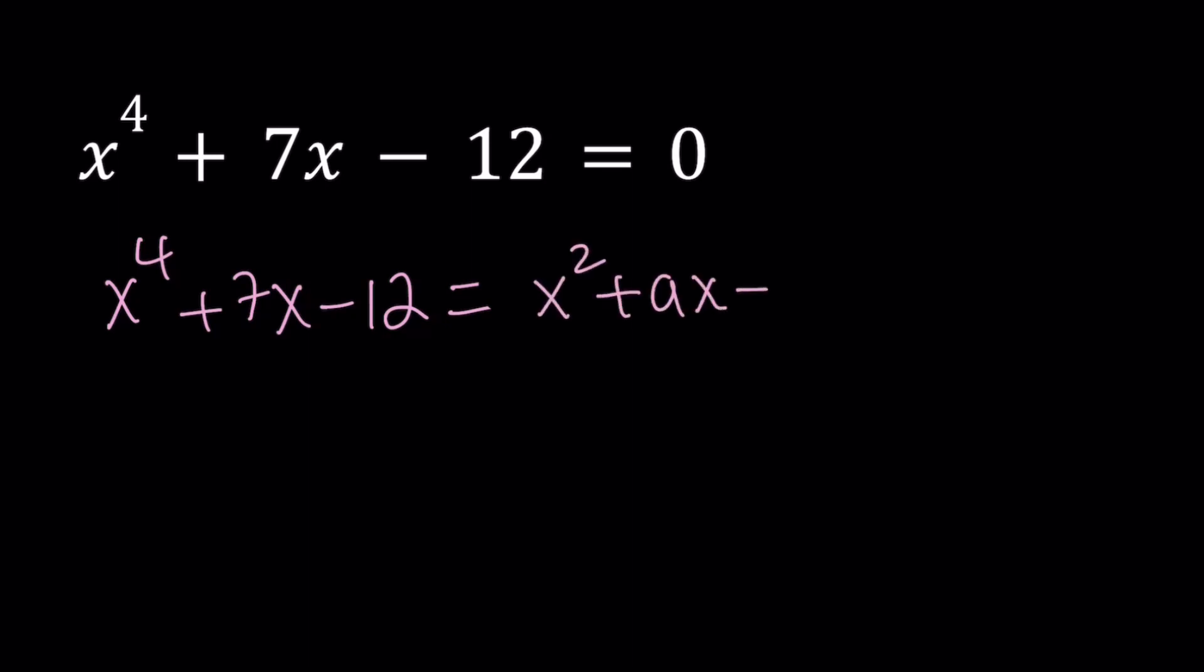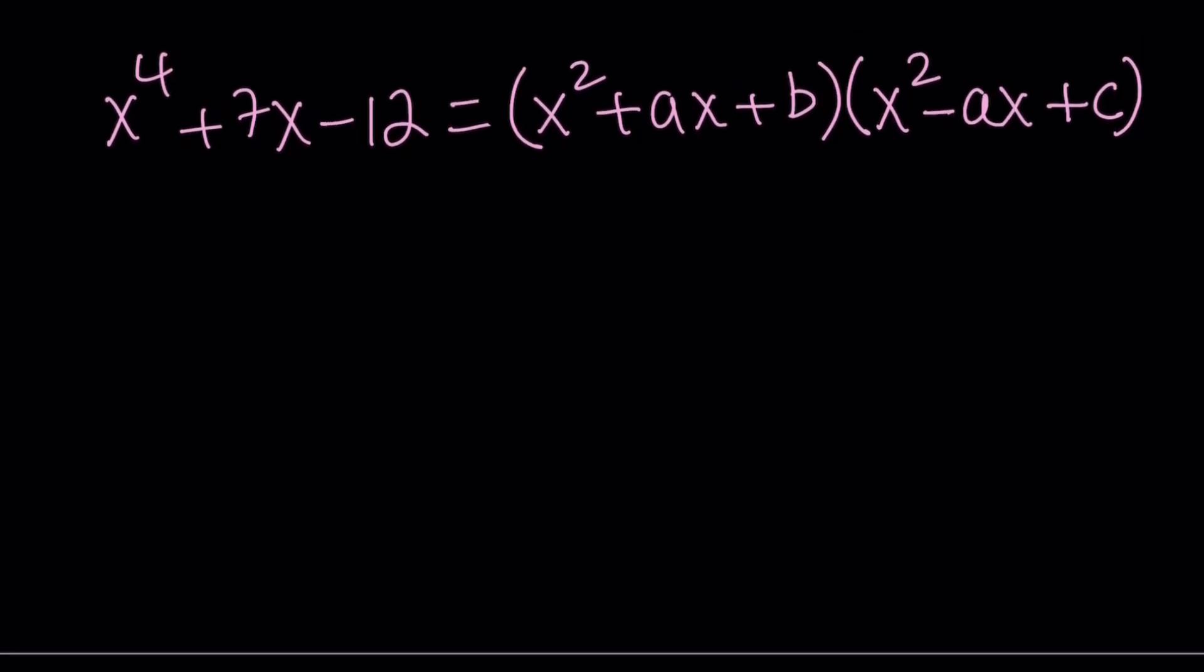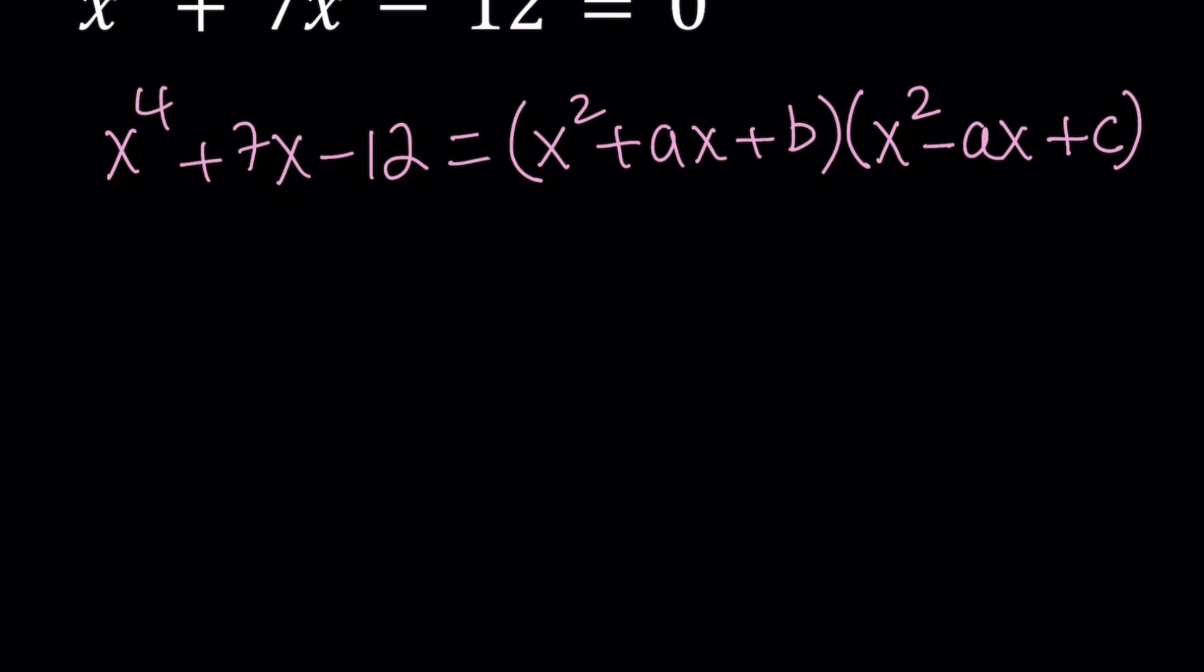We're going to write x squared plus ax plus b as our first factor. And the second factor, instead of using cx, I'm going to use minus ax, and then use c for the constant. When you distribute the x squared over the negative ax, you get a negative ax cubed, and then you get a positive ax cubed, so the x cubed cancels out. This eliminates the number of variables we have to use, therefore solving this as a system will be easier.